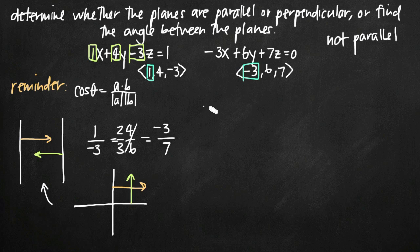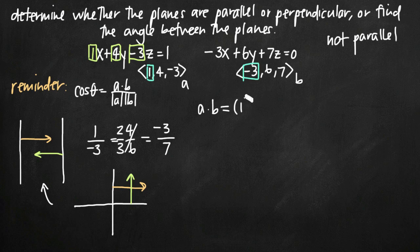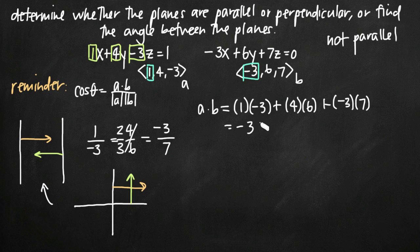I'll call my vectors a = (1, 4, -3) and b = (-3, 6, 7). The dot product of a and b is computed by multiplying corresponding components: (1)(-3) plus (4)(6) plus (-3)(7). Simplifying: -3 plus 24 minus 21 equals 0. If my dot product equals 0, then my vectors are perpendicular. So I've proven that my normal vectors are perpendicular, which tells me that my planes are also perpendicular to one another.